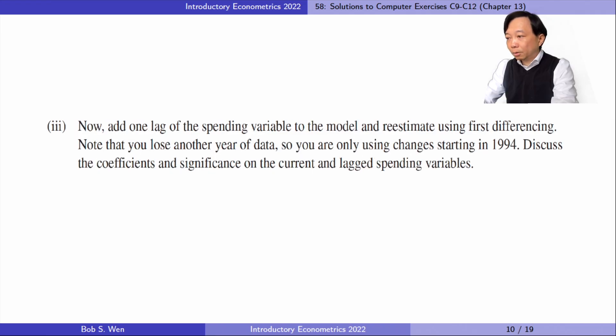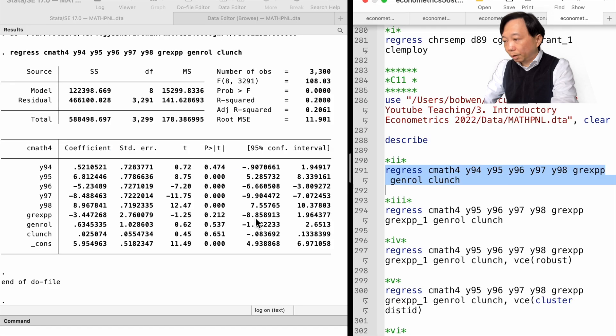In part 3, we add one lag of the spending variable to the model and estimate using first differencing. Note that we lose another year of data, so we are only using changes starting in 1994. In the first differenced equation with an intercept, we will include year dummy variables from 1995 to 1998. We discuss the coefficients and significance on the current and lag spending variables.